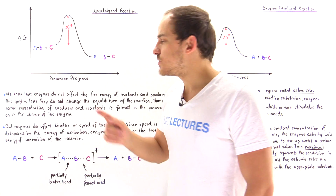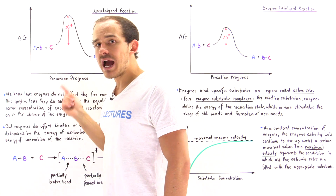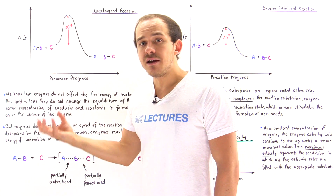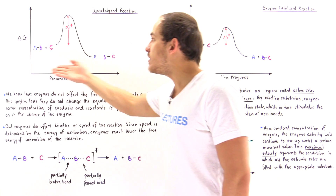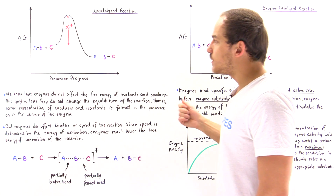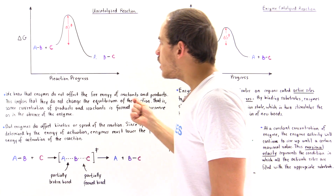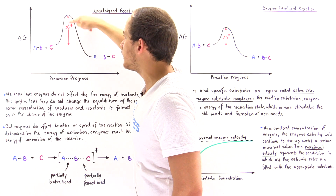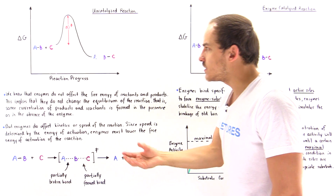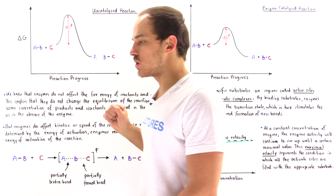If we take the free energy of the products and subtract it from the free energy of the reactants, we get a negative value — meaning free energy will be released when this reaction takes place. The delta G is negative, which implies this reaction is exergonic and spontaneous. As long as we have enough energy to overcome the activation barrier, the reactants will naturally form these products because they are lower in energy and therefore more stable.